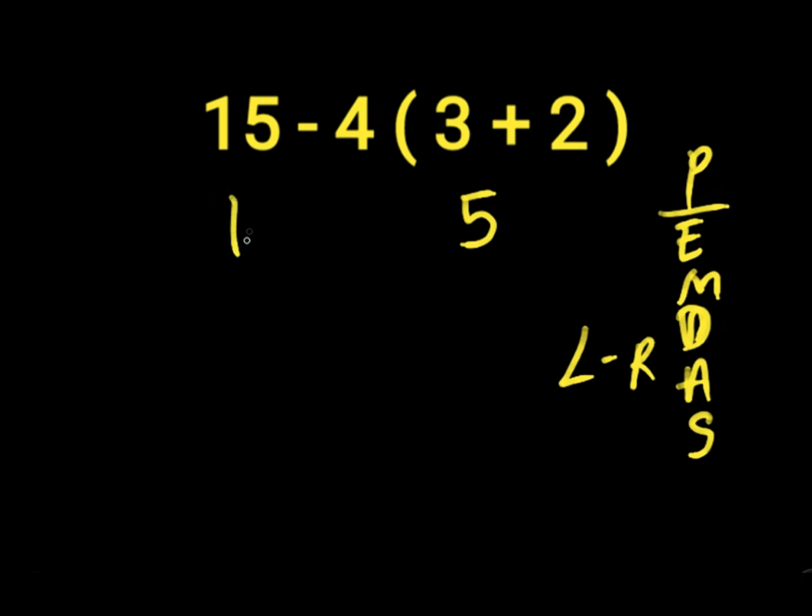Then we have 15 minus 4 times 5. If a number is close to a parenthesis, there is a multiplication sign in between, which is this multiplication here. So, we solve our multiplication first before subtraction because multiplication comes first before subtraction.